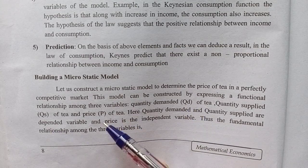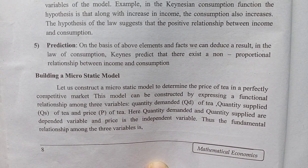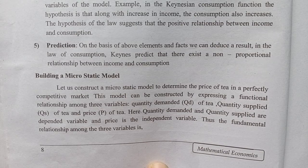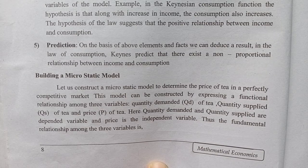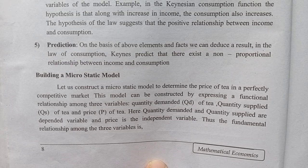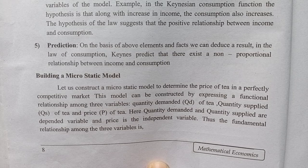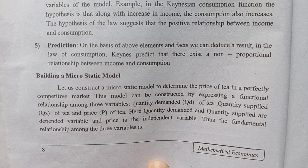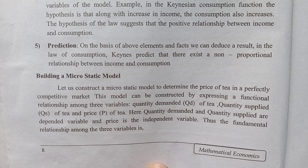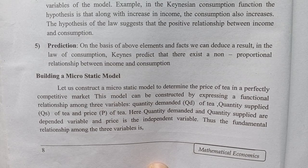Now, QD, QS, and P. Here, quantity demanded and quantity supplied are dependent variables, and price is the independent variable. That is the fundamental relationship among the three variables.